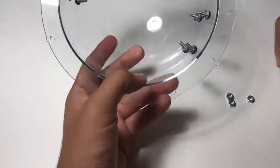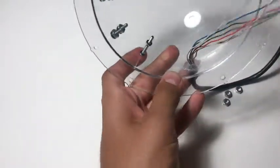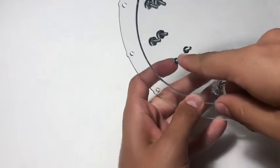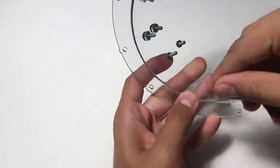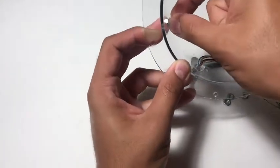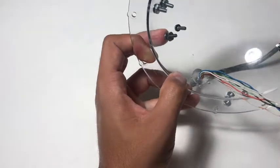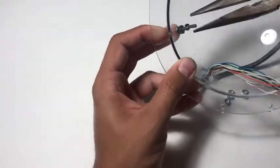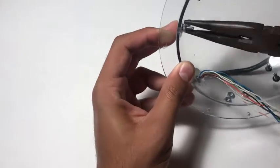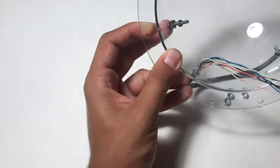Now we can break out our set of 10 632 nuts. We're just going to thread them onto each one of these screws hand tight. Once it's on hand tight, we can take out our set of needle nose pliers and tighten it one to maybe two full turns.